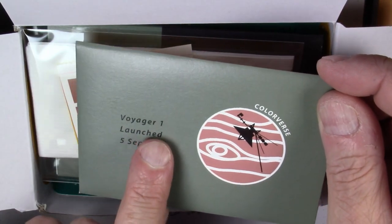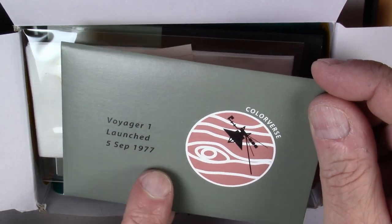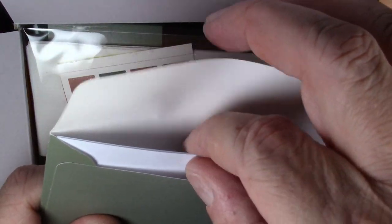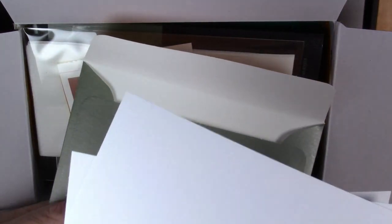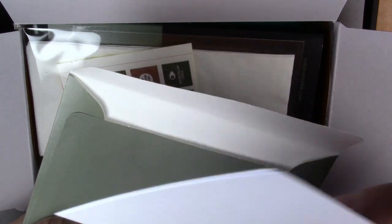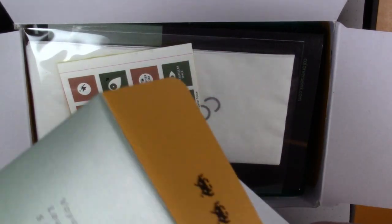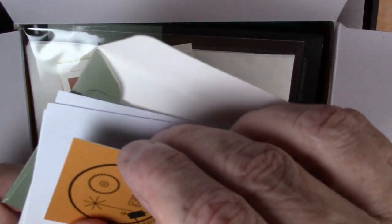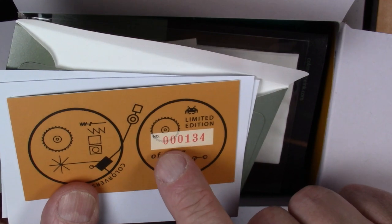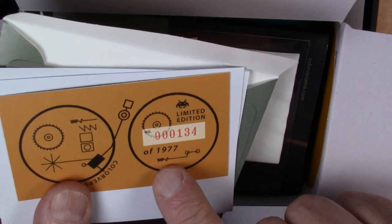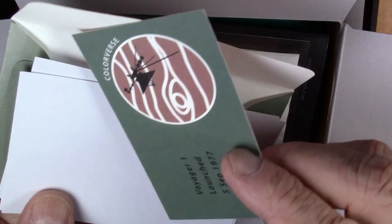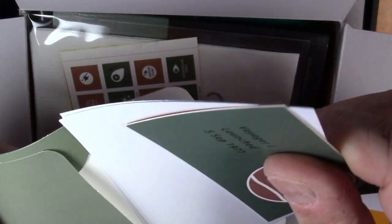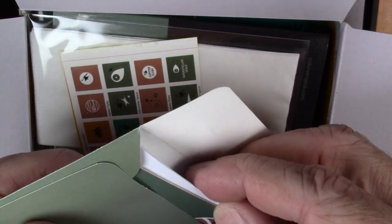You get this little envelope that says Voyager 1 launched on September the 5th, 1977 with some Colorverse artwork here. You open up the envelope and you get a couple of sheets of paper, which are interesting. I guess you could use this as a gift card, presumably, if you're gifting it. And then you get your limited edition card. So this is a limited edition. This was set number 134 out of 1977. And again, it says here, Voyager 1 launch 5th, September, 1977.